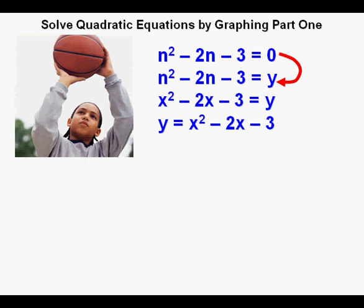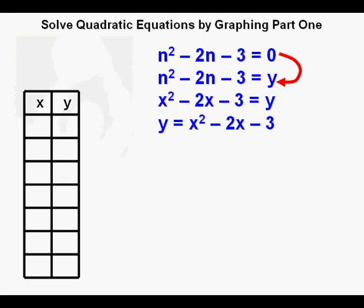Joe has now created a quadratic function from a quadratic equation that he can graph on a coordinate plane. For cosmetic purposes, Joe switches the function to have the dependent variable y on the left side where he is more accustomed to working. Joe now creates a table where he will obtain points to be graphed.